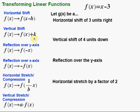So, if we're given a horizontal shift to the left of 3, for example, then the number that represents that would be negative 3. We would put negative 3 in here for h, so it would be x minus negative 3. Well, minus a negative is plus, so it would be x plus 3. So be on the lookout for that.